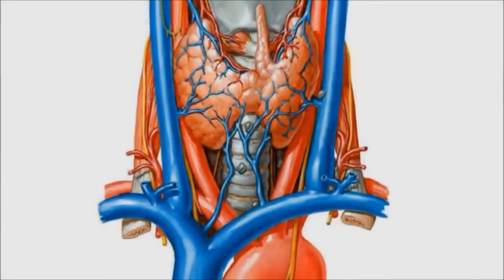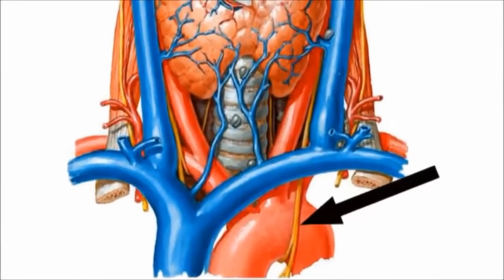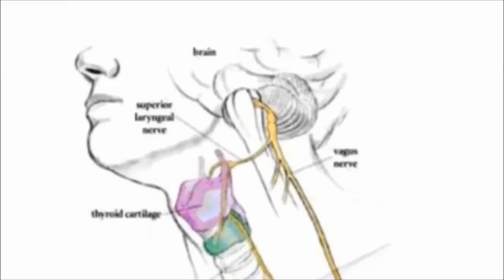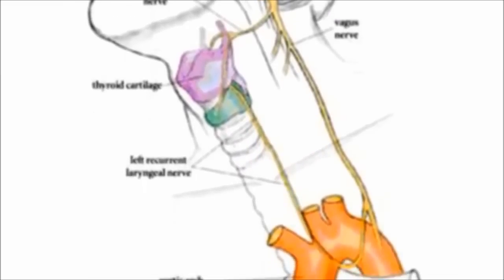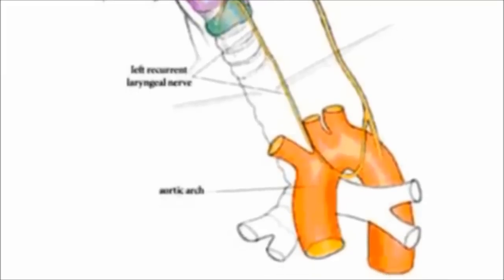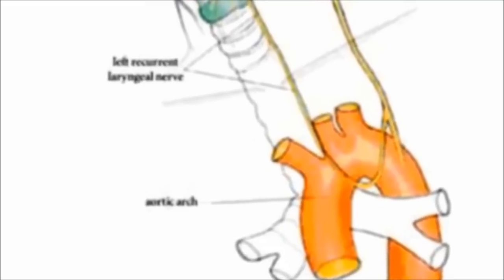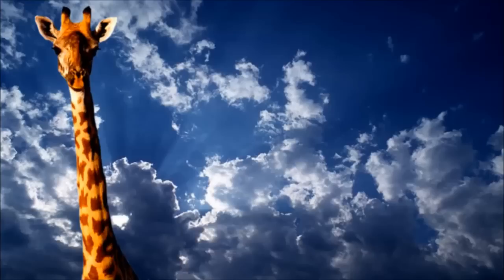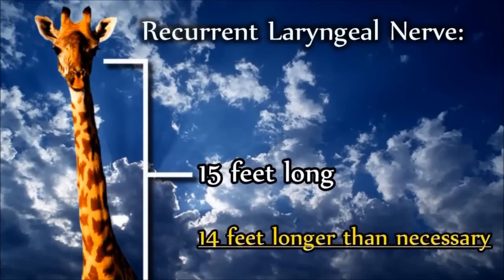Another seemingly wasteful structure is the recurrent laryngeal nerve, which regulates the ability to swallow in mammals, and in humans has the added function of controlling speech. In our mammalian ancestors, the nerve took a direct route from the brain to the throat, passing directly in front of the aorta. However, during the course of evolution, the aorta shifted inferiorly. Being such an important structure, the nerve could not be broken, so instead it became longer in order to loop back up and reach the throat. In giraffes, the recurrent laryngeal nerve is 15 feet long — a full 14 feet longer than necessary.